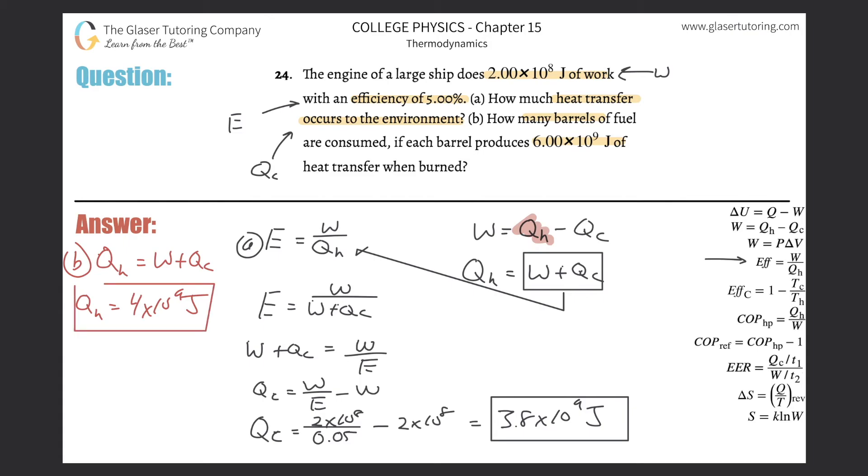Where's the heat coming from? The heat's coming from the fuel being burned. If each barrel produces this amount of energy, and this is the total energy the engine consumed, we can simply do a division to find how many barrels.